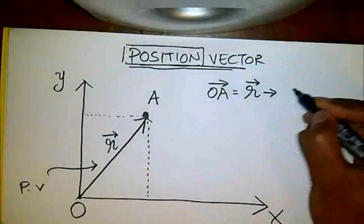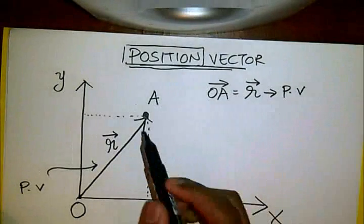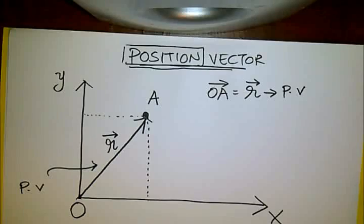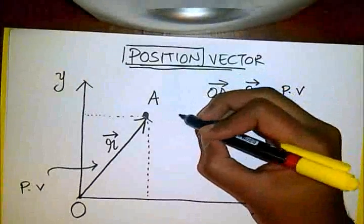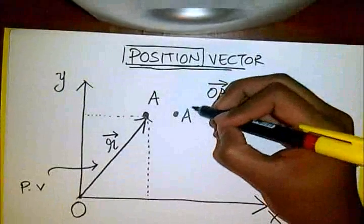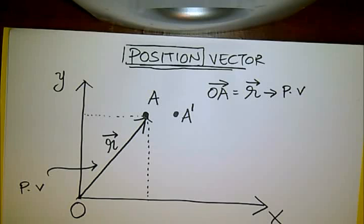or vector R, is your position vector. Now, say you went from A to another point, the particle moved to another point. Let this be A dash. Now, I could have called it B, but we like to make things look cool, so we put A dash.